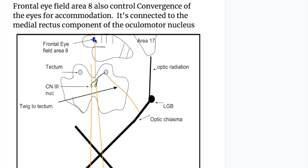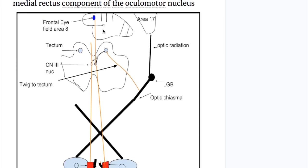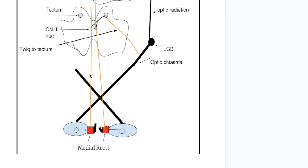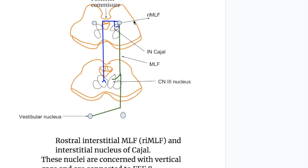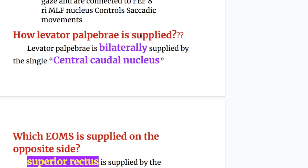Frontal eye field area 8 also controls the convergence of the eye for accommodation. It is connected to the medial rectus component of the oculomotor nucleus. The oculomotor nucleus is also connected to the rostral interstitial medial longitudinal fasciculus nucleus and to the interstitial nucleus of Cajal. These nuclei are concerned with vertical gaze.